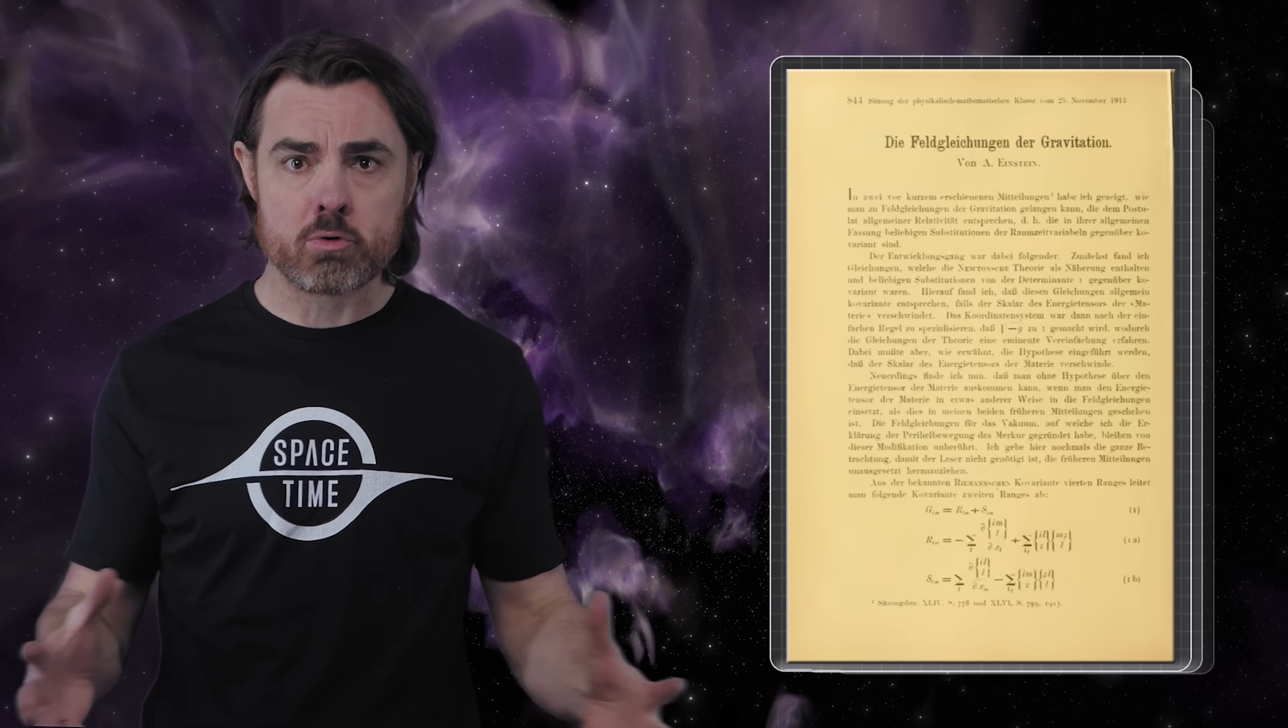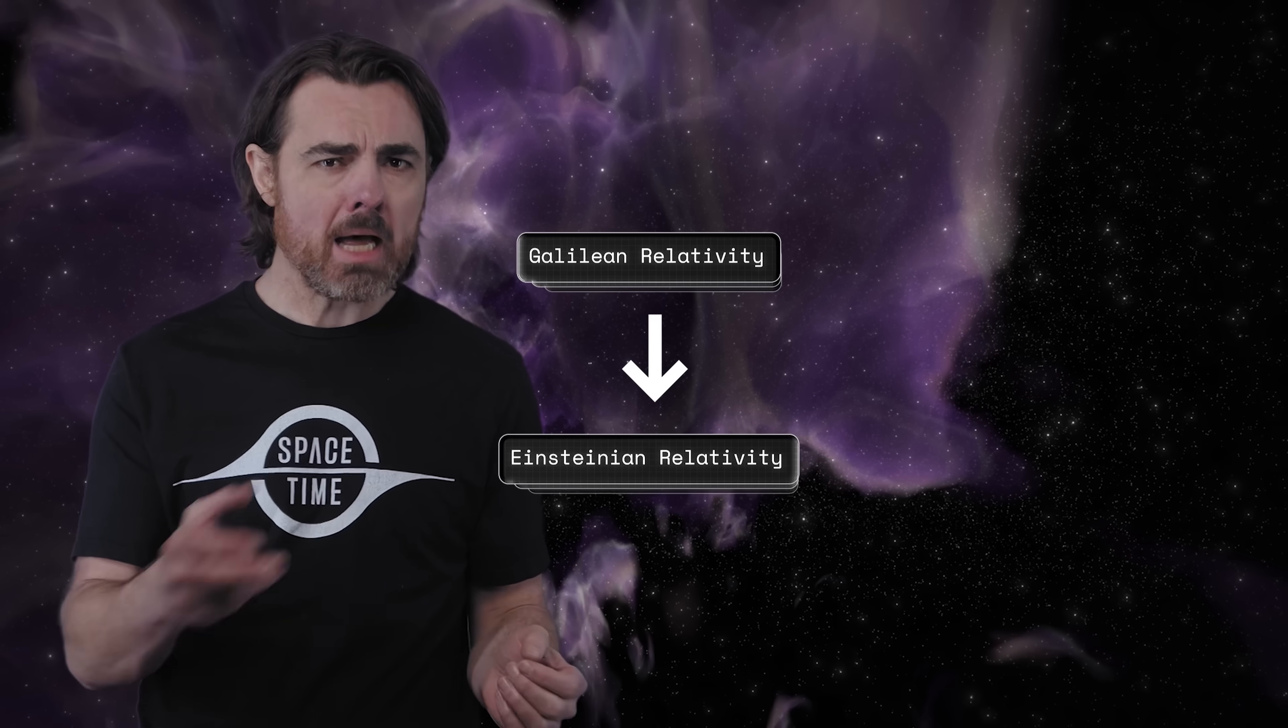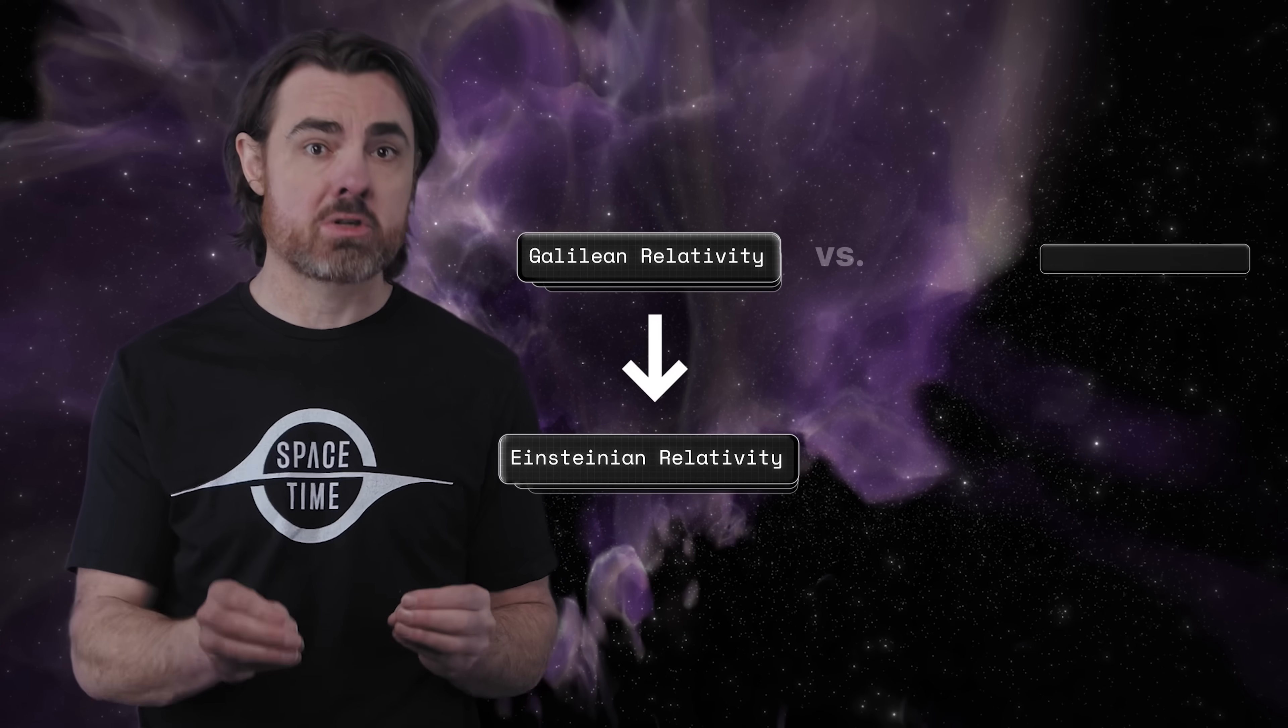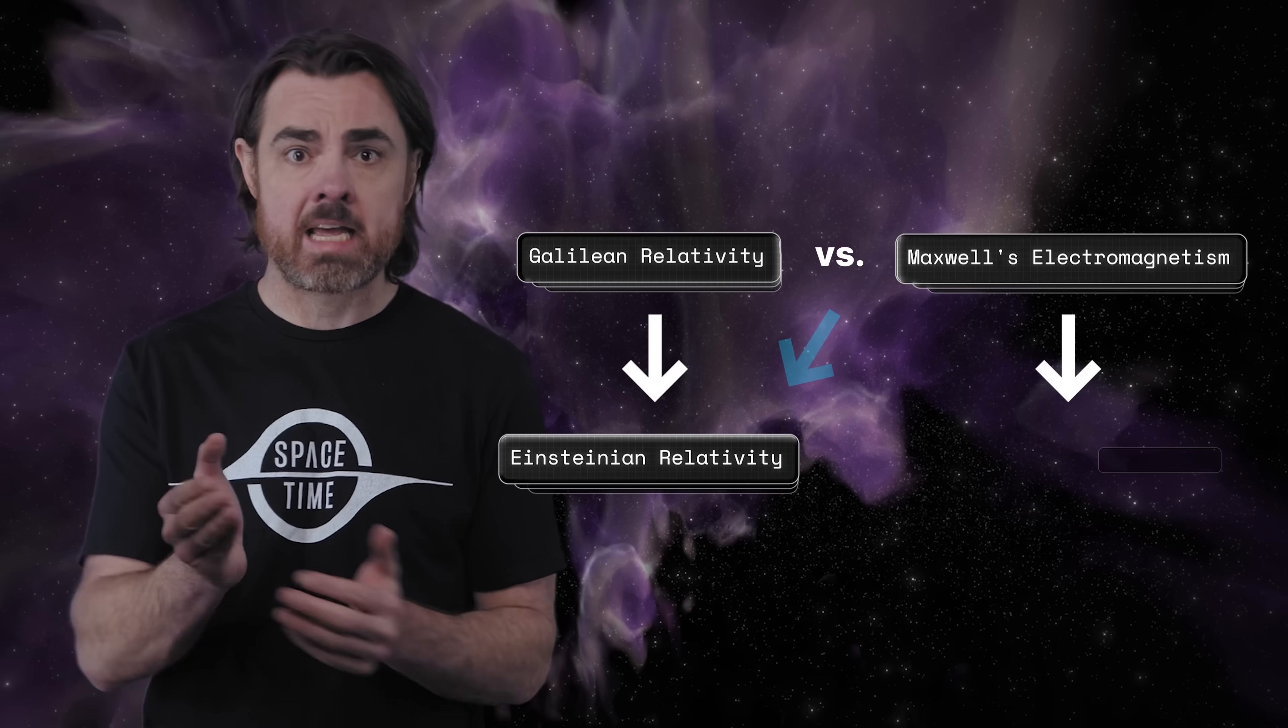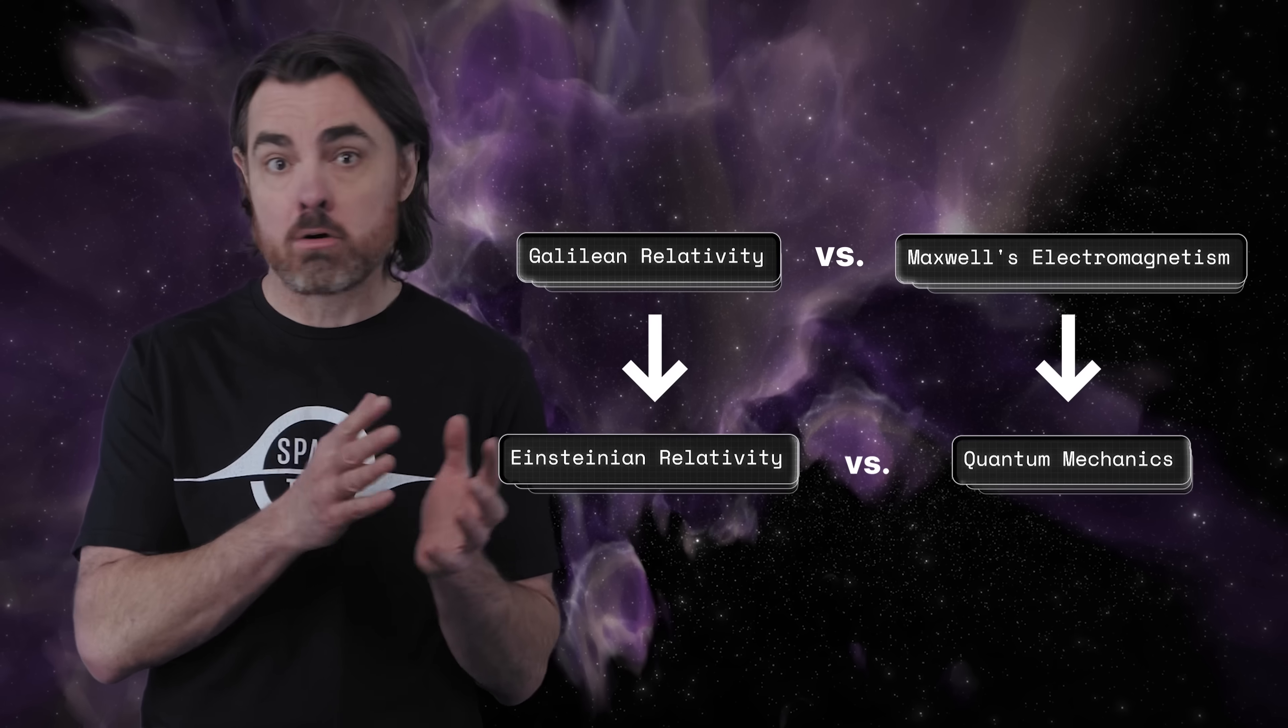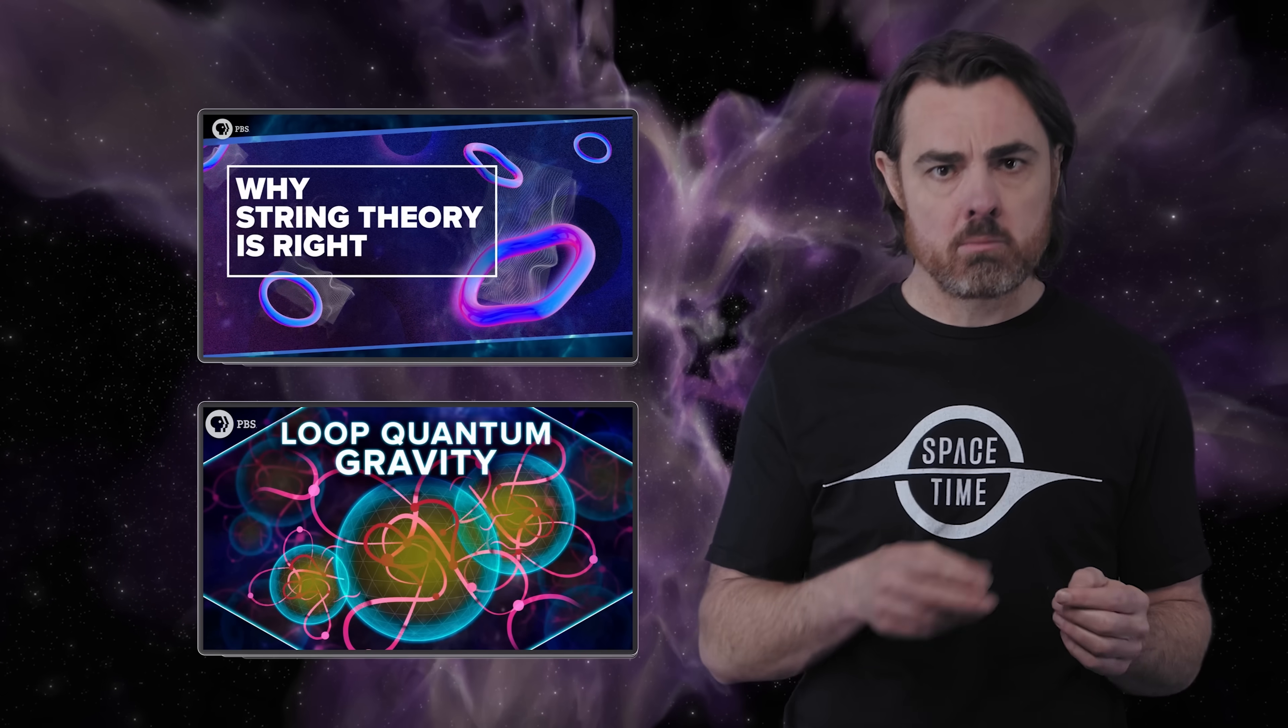This is fixed in Einsteinian relativity by including this extra factor during that transformation so that nothing ever exceeds light speed. This is the Lorentz transformation, and the factor that we added is the Lorentz factor. And the fact that the laws of physics don't change in a Lorentz transformation is called Lorentz symmetry. A similar idea about the invariance of the laws of physics in accelerating frames of reference versus gravitational fields gave Einstein the general theory of relativity in 1915. But GR revealed a new contradiction.